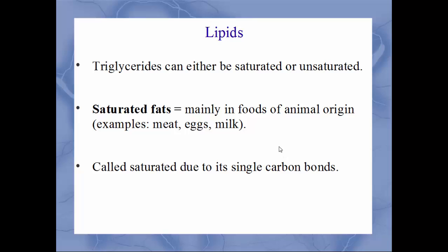Triglycerides can either be saturated or unsaturated. Saturated fats come from animal sources — meat, milk, eggs, and so on. At room temperature, these are going to be solid, which is why they're not healthy. They're called saturated because the carbon forms all single bonds, which allows the molecules to stack on top of one another like a deck of cards and form a solid mass at room temperature. These are the unhealthy ones.